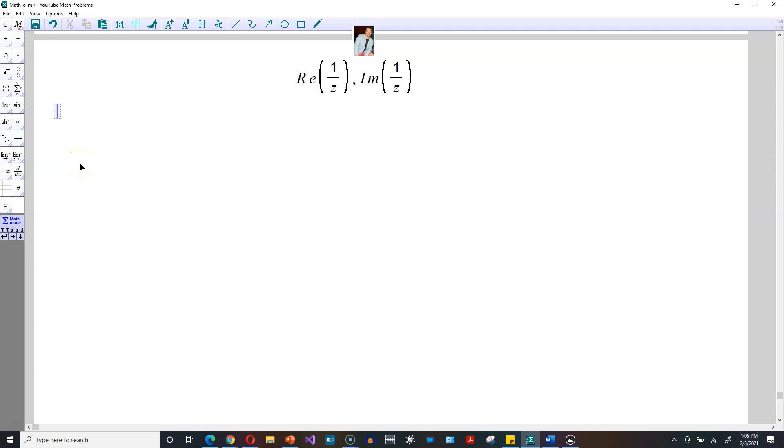Welcome friends, and this one is finally the real part of 1 over z, and also the imaginary part of 1 over z. So it's going to be here 1 over z. This is equivalent to 1 over x plus yi by the definition of a complex number z.